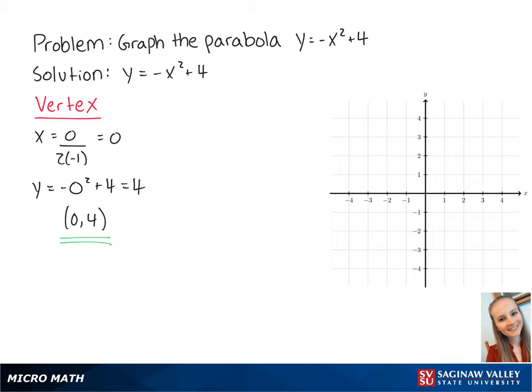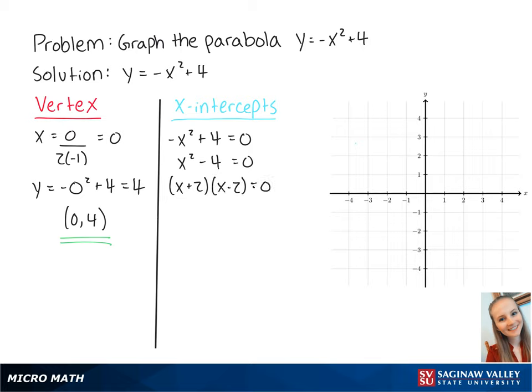Now we want to find the x-intercepts, which is when y is equal to 0. So we set up the equation negative x squared plus 4 equals 0. If we multiply both sides by negative 1, we get x squared minus 4 equals 0. Now we can factor out the left side to become (x + 2)(x - 2), which is equal to 0. This gets us x equals negative 2 or x equals 2.